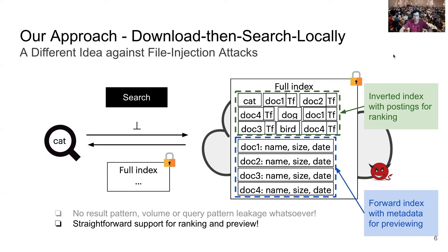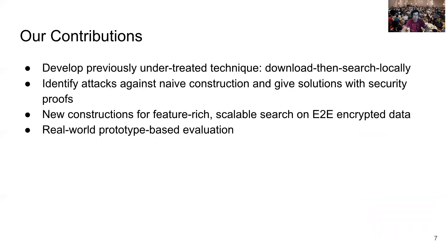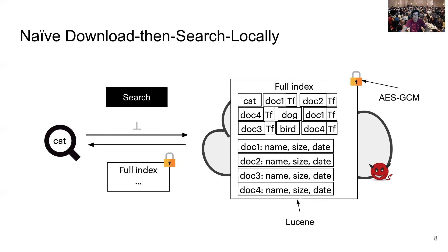Users can also embed a forward index, which is a mapping from the document identifier to the metadata of the document. In our work, we develop the previously undertreated download-then-search-locally technique, identify attacks against the naive construction, and give solutions with security proofs. We further propose new constructions for feature-rich, scalable search on end-to-end encrypted data. The naive construction uses standard indexing libraries such as Lucene encrypted with standard libraries such as AES-GCM, uploaded to the server, then downloaded and decrypted at search time.